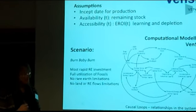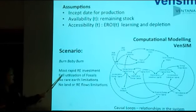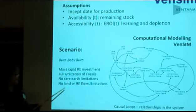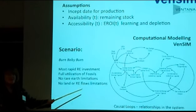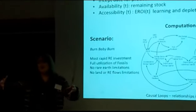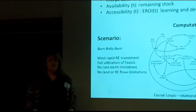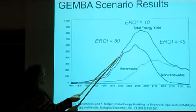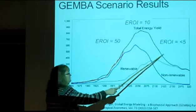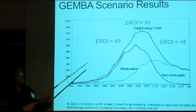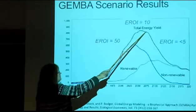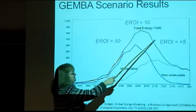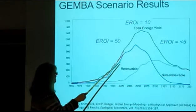What I'll show next is the most optimistic version: the burn-baby-burn scenario — we use all that fossil fuel and simultaneously undergo the most rapid renewable energy investment, with no rare-earth limitations and no flow limitations. If you could have all the land you wanted — no constraints on anything — here's the future. The red line is historical behavior; the black line is known fossil fuel reserves consumed at their known EROI. We consume them with enthusiasm and hit a peak — that's coal, gas, oil all in the air — then it declines.